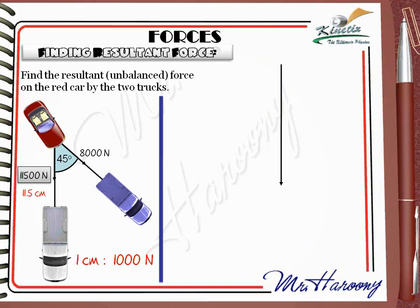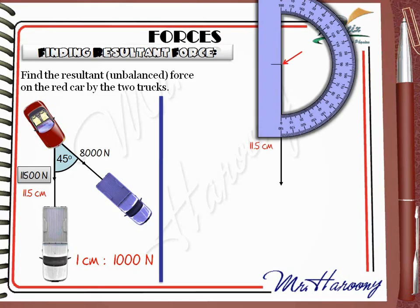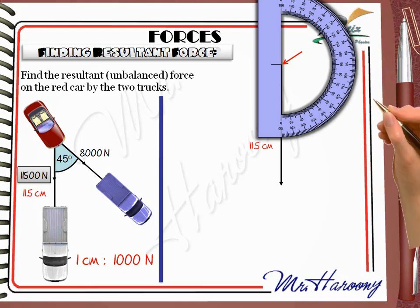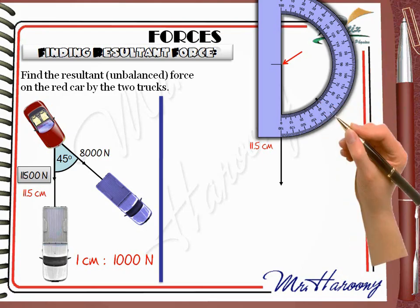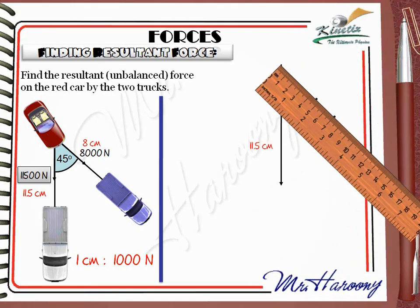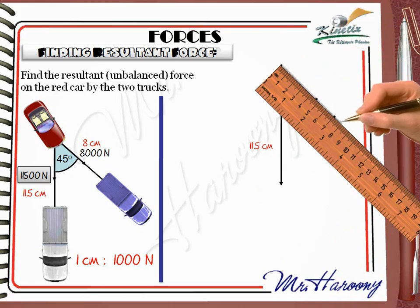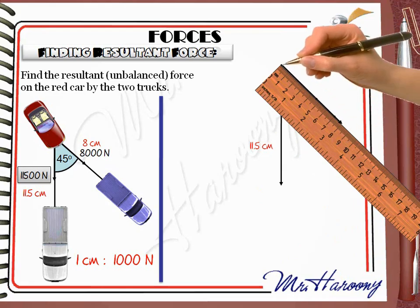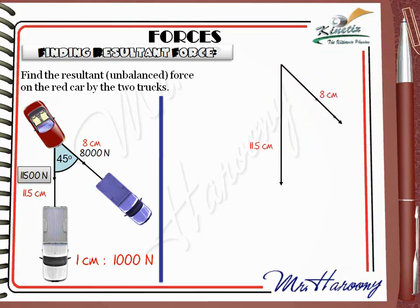After that, get your protractor and put its center point exactly on the start point of the arrow you just drew. Mark the angle of 45 degrees on the protractor, get the ruler again, and draw an 8 cm arrow. This represents the second force, which is 8000 N.